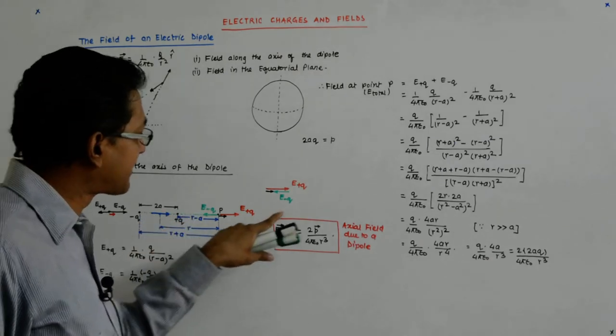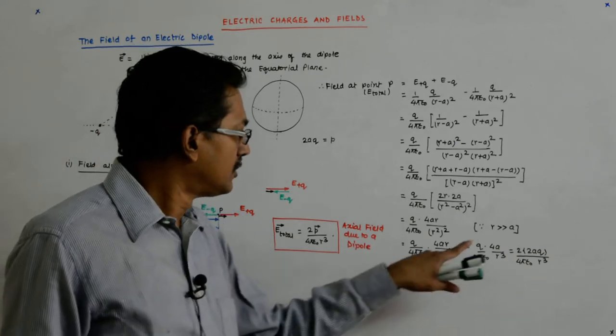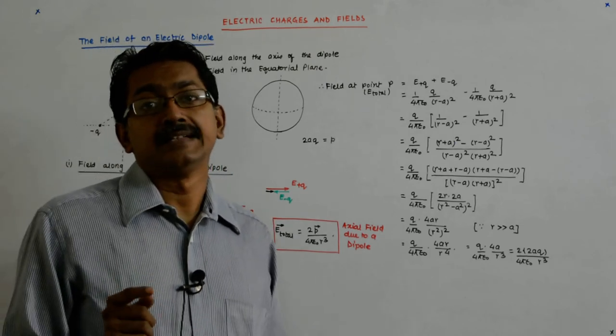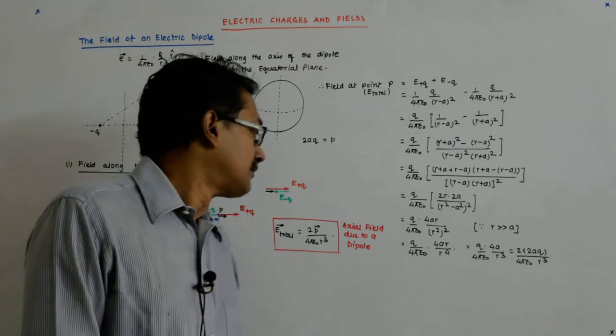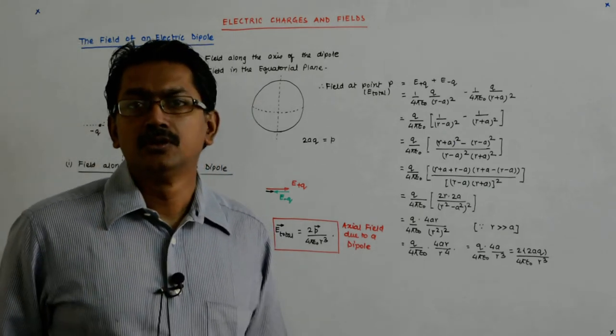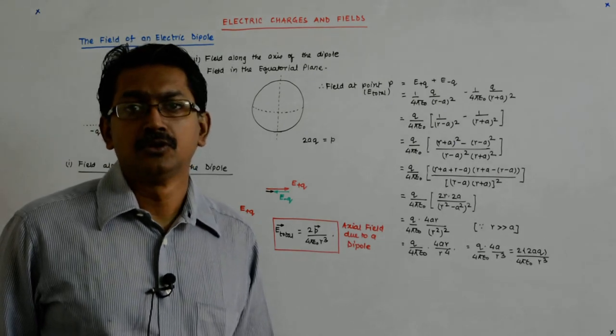Now it is for this reason that the dipole moment has been defined as 2aq, because this term comes in. And it is the reason why its direction has been defined as being from negative to positive.